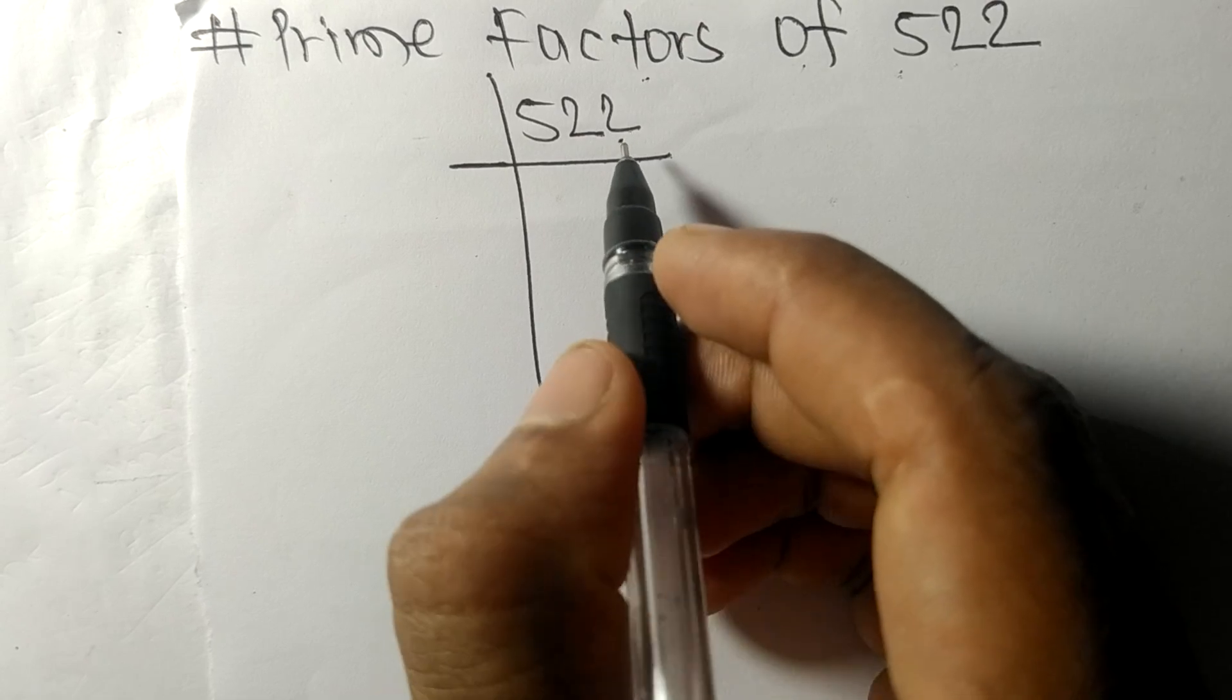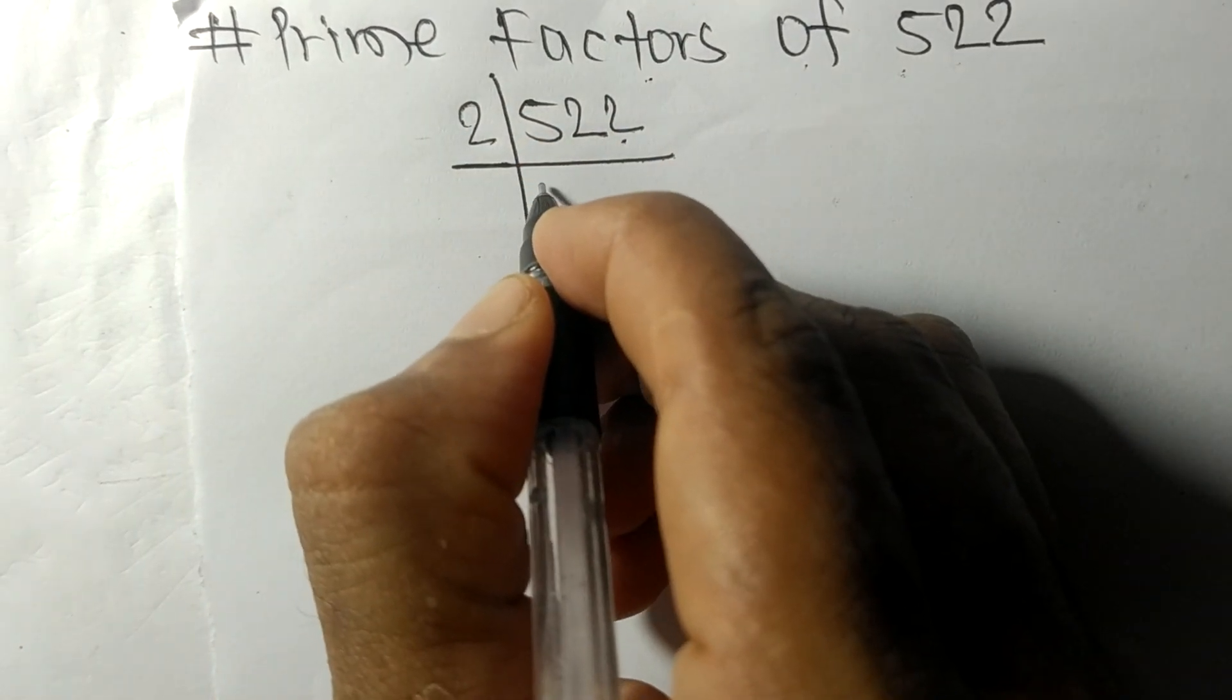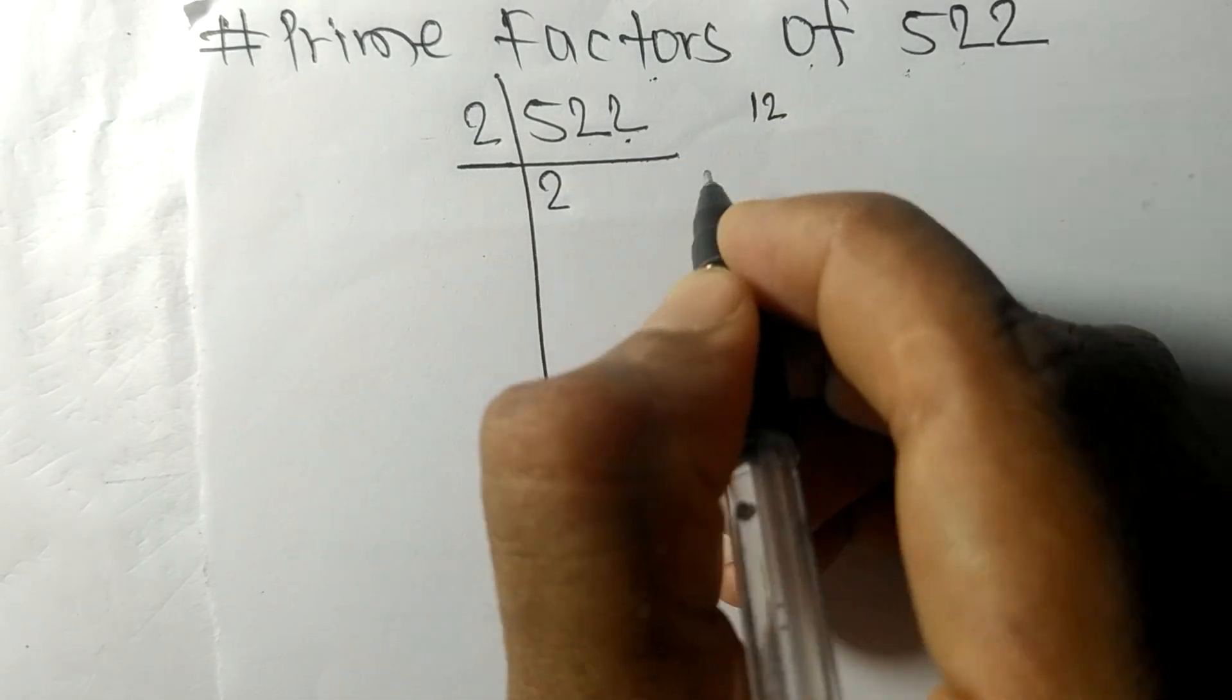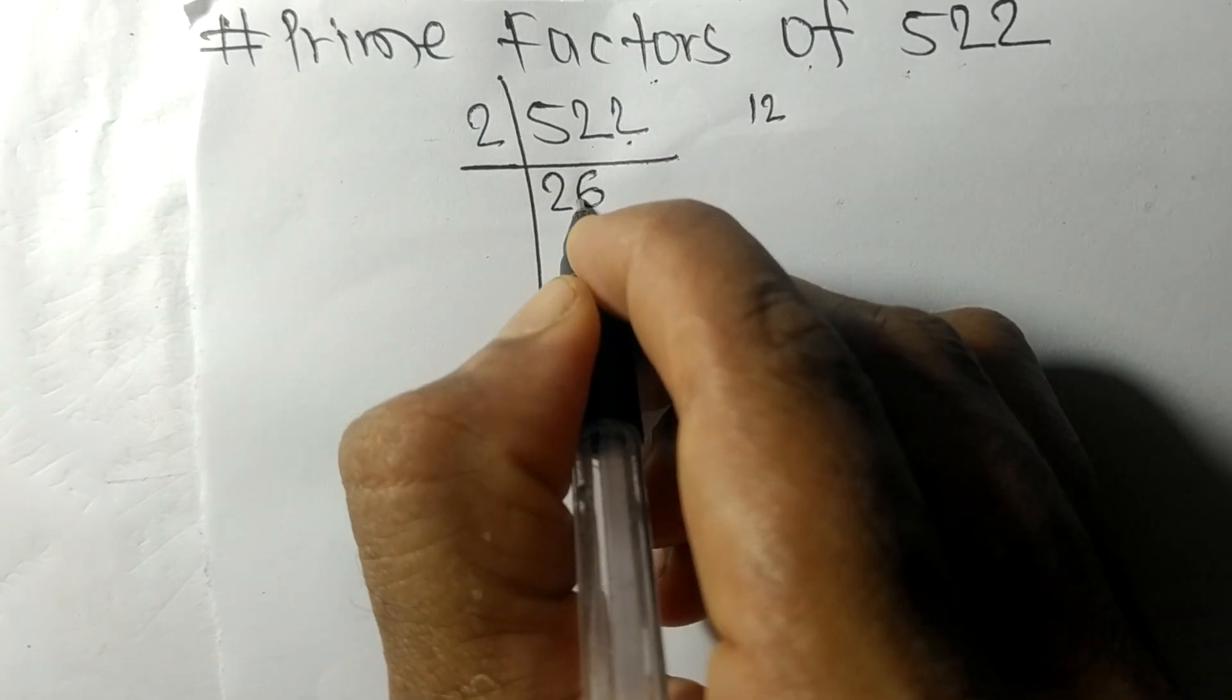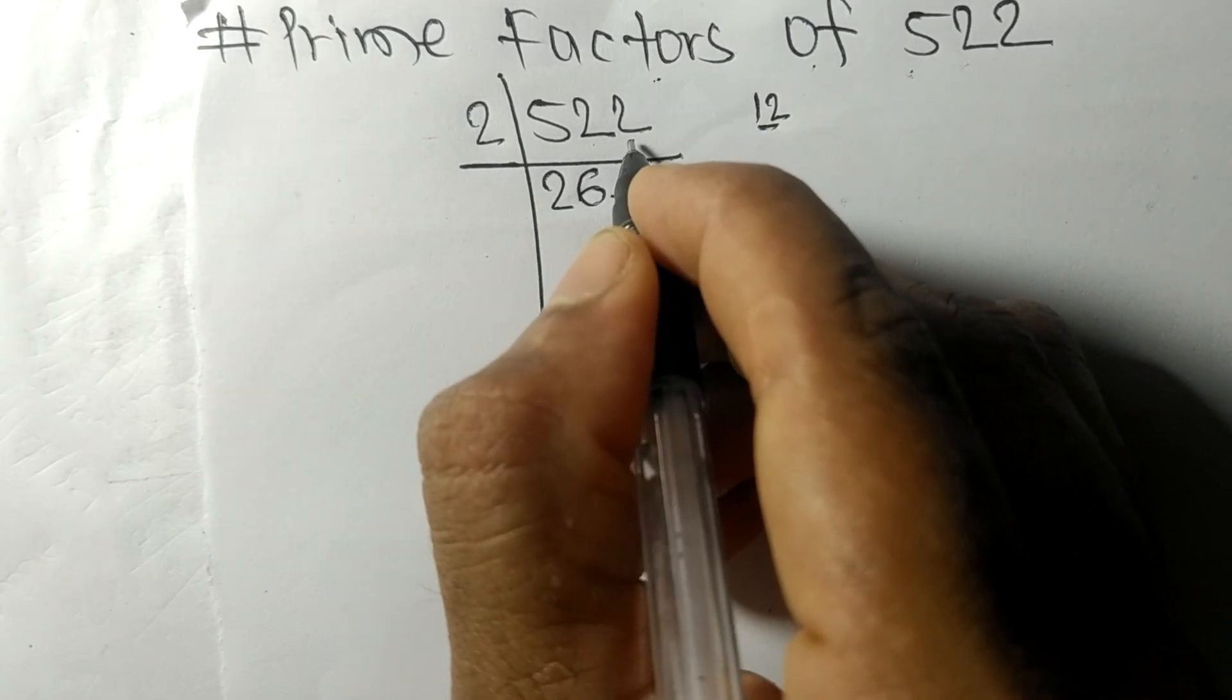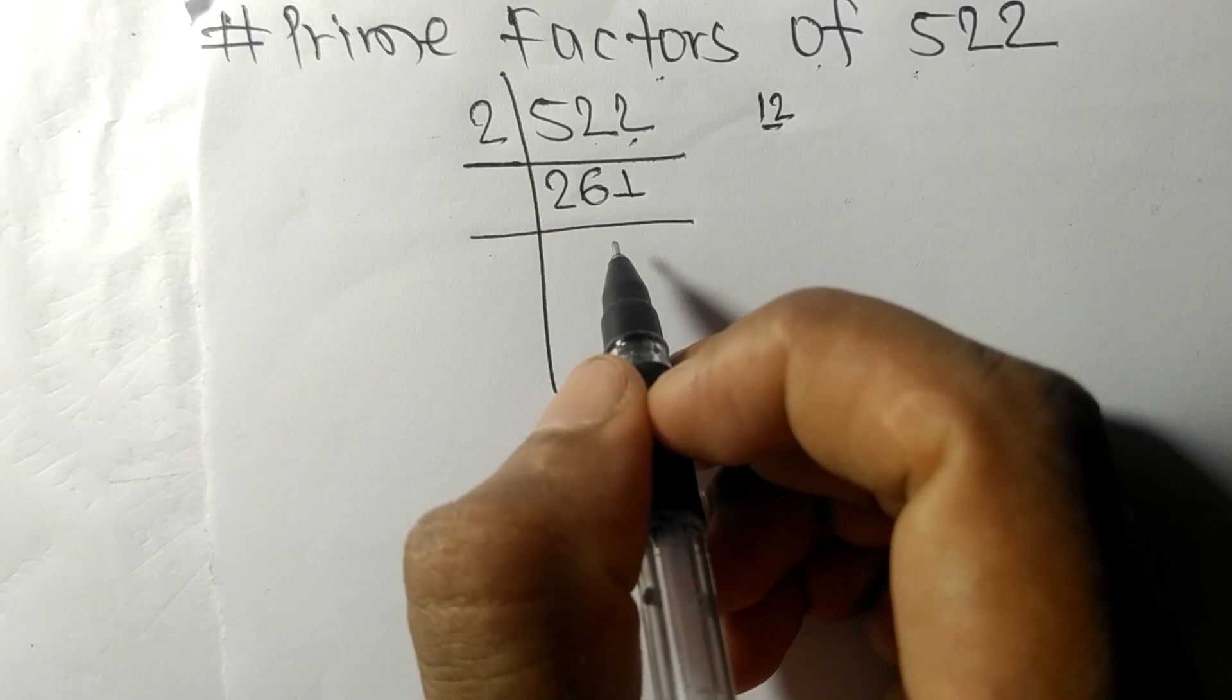2 times 2 means 4, remainder 1, and this 2. 2 times 6 means 12, and 2 times 1 means 2. So now we got here 261.